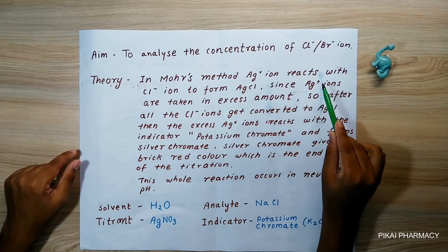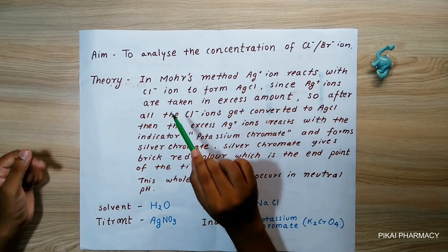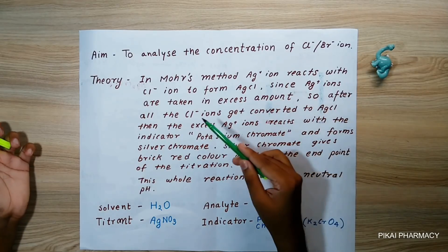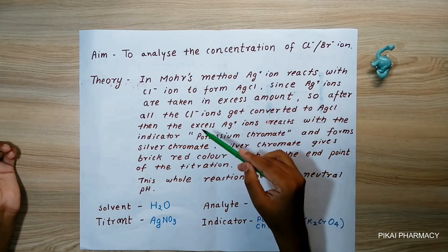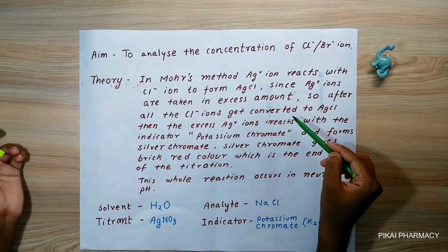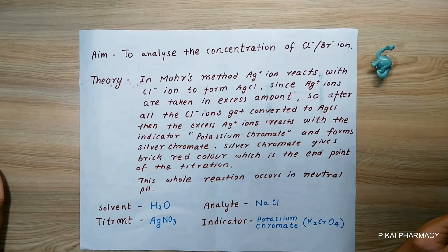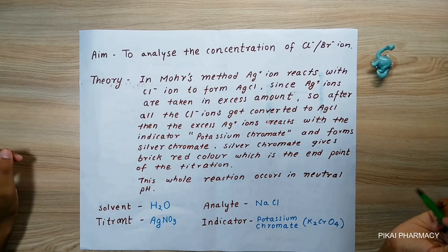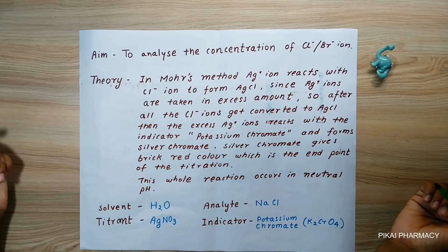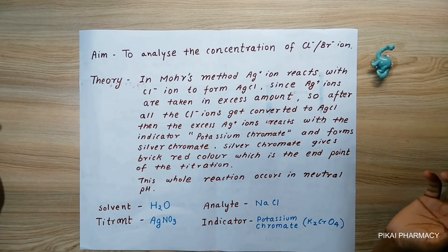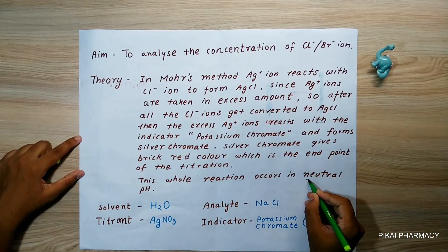In the Mohr method, Ag⁺ ions react with chloride ions to form AgCl. Since Ag⁺ ions are taken in excess, after all the chloride ions are converted to AgCl, the excess Ag⁺ ions react with the indicator, potassium chromate, forming silver chromate. This silver chromate gives a red color which denotes the endpoint of the titration.